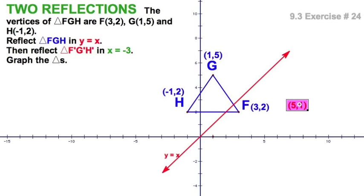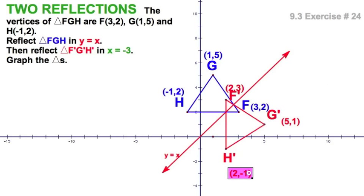So 1, 5 becomes 5, 1. 3, 2 we'll flip over to 2, 3. Negative 1, 2 becomes 2, negative 1. When I draw in that triangle, it's right there. And that is my reflection across the line Y equals X. Very good.